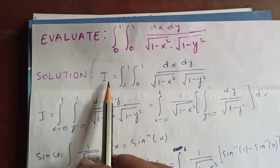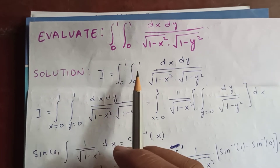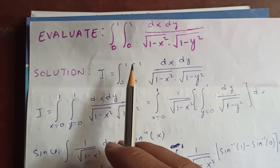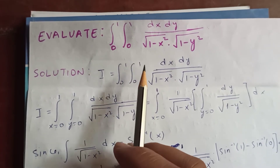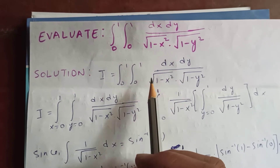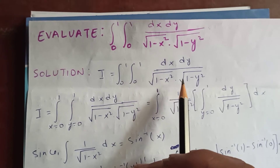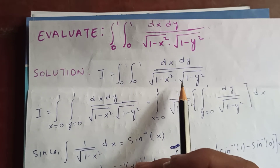So our solution: let i equal to our integral, integral from 0 to 1, integral from 0 to 1, dx dy by square root of 1 minus x squared into square root of 1 minus y squared.